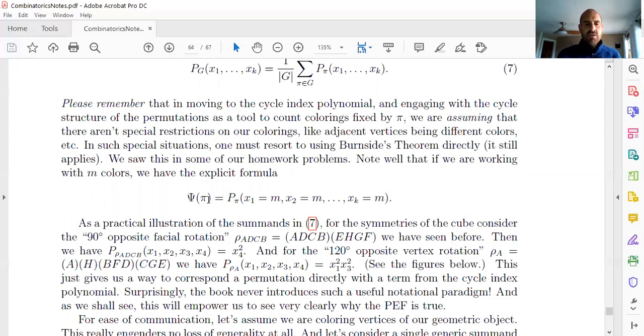And we were just interested in trying to really study each one of those cycle index polynomials for a given permutation. And once we understood that well, that's what enabled us to really see what's going on with Polya's enumeration formula. So this thing right here was something I said I was going to put in here, namely that Psi of pi, if I have M colors that I'm working with, and remember, we're freely assigning these colors.